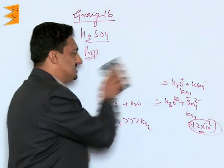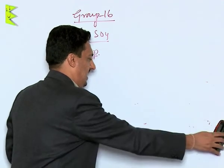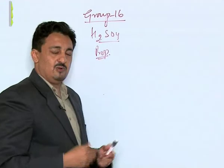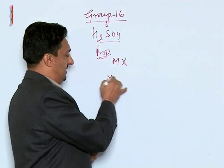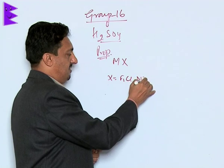Then since its boiling point is very high, this sulphuric acid is used to prepare other volatile acids. Like if we can take MX, like X can be your fluorides or chlorides or nitrate.